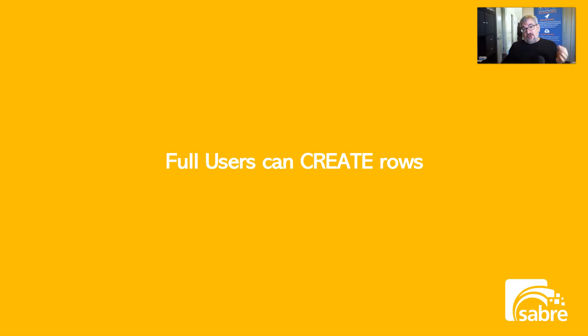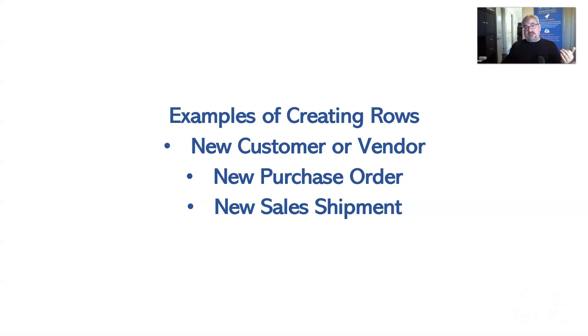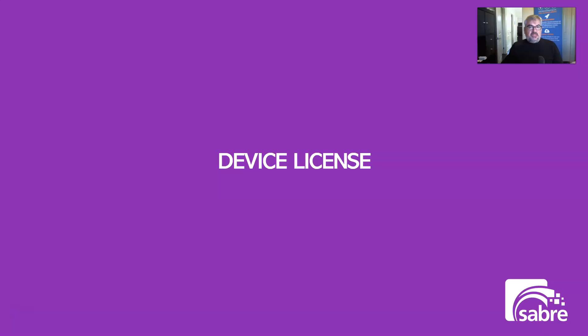Full users can create rows. Team members can edit things that have been created by a full user, but full users are the ones who can create things — new customers, vendors, items, new purchase orders, or new sales shipments. These are the pretty significant tasks that need to be done. It's usually safe to assume that most users who are going to be working in the ERP all day are going to be full users. It's pretty rare that you can get away without that.